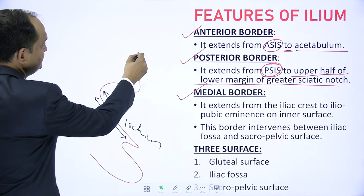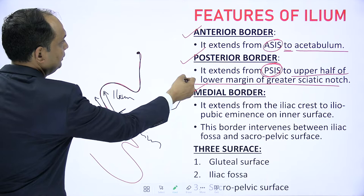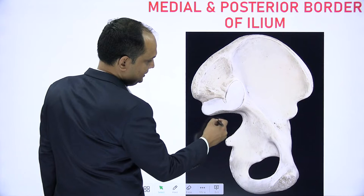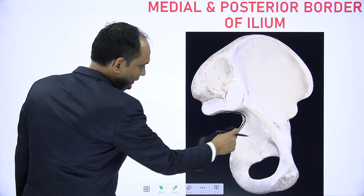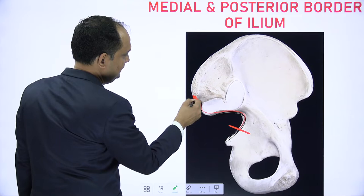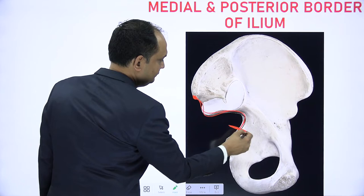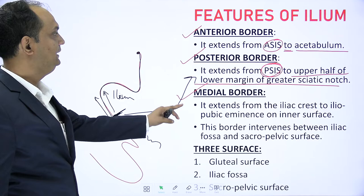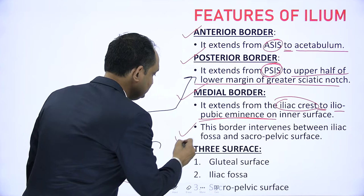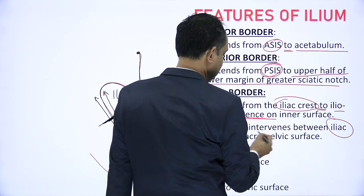The posterior border starts from the posterior superior iliac spine and ends at the junction of the upper half of the lower margin of the greater sciatic notch. In the greater sciatic notch, this part is not completely formed by a single component — it has contribution of two parts, so we divide it into two halves. The medial border extends from the iliac crest to the ilio-pubic eminence on the inner surface, dividing the two surfaces: iliac fossa and sacro-pelvic surface.